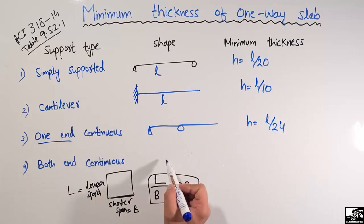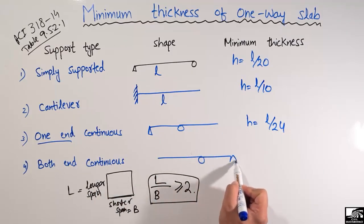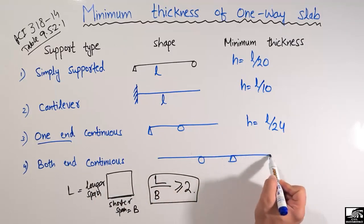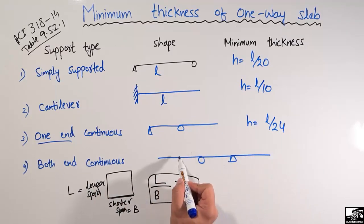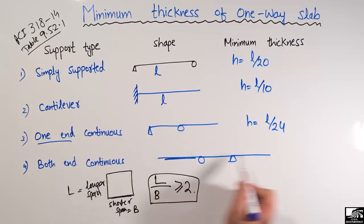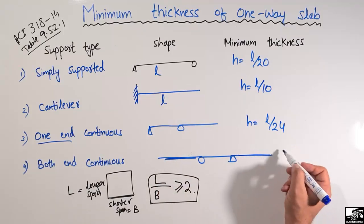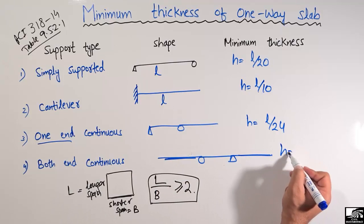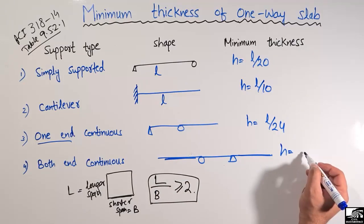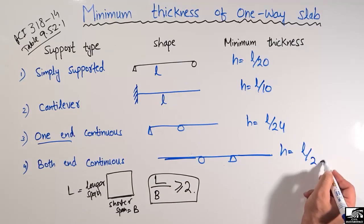If both ends are continuous — both this end and this end are continuous — then the minimum thickness for that one-way slab will be equal to L divided by 28.